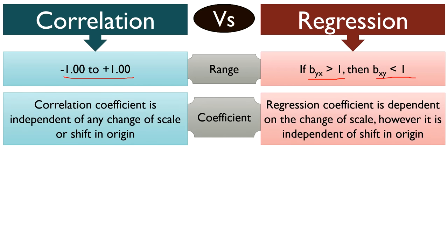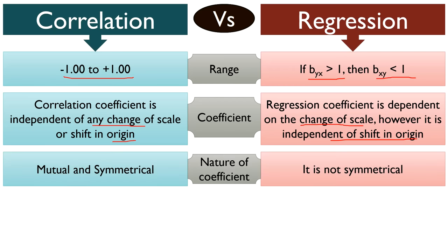Correlation coefficient is independent of any change of scale or shift in origin. Conversely, regression coefficient is dependent on the change of scale, however it is independent of shift in origin. When it comes to the nature of coefficient, correlation coefficient is mutual and symmetrical — meaning that correlation between x and y is the same as between y and x. In contrast, regression coefficient is not symmetrical, meaning that regression of y on x is not the same as x on y.